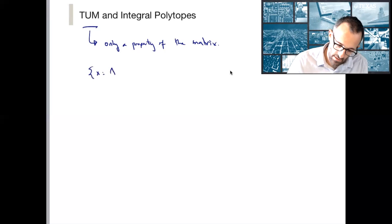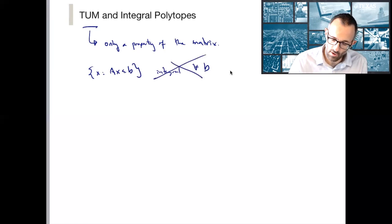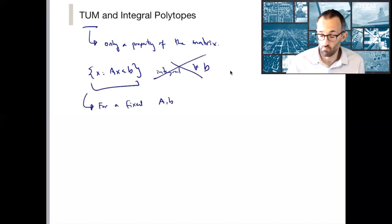So again, we're talking about this as being integral for all b. But what if instead we want to characterize for a fixed a and b, when is this integral?